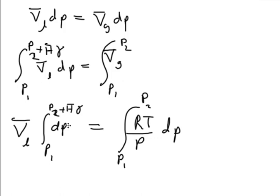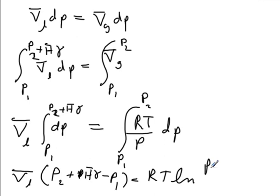Okay, and we can integrate both sides. We can see just a difference here. So we have P2 plus the Laplace pressure minus P1. And the right-hand side, we've got... We'll pull the RT out since temperature is constant. And then we'll just have a logarithm of P2 over P1.